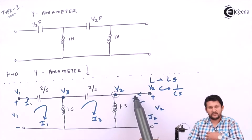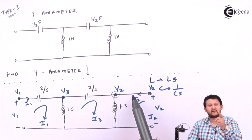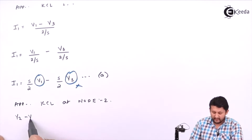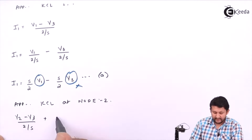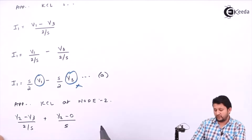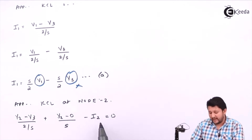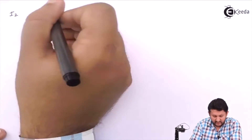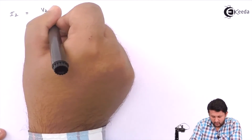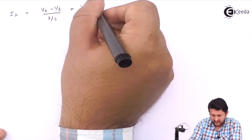Since we assume all the currents are moving outward, and some currents are actually moving inward, those are opposite to our assumption so we take them as negative. The KCL equation at Node 2 gives us terms like V2 minus V3 upon 2 over s, and V2 minus V1 upon s. Since I2 is not following our assumed direction, it appears with a negative sign. Summing all terms equal to zero, we can find I2.